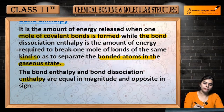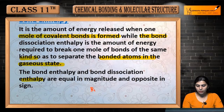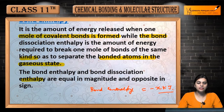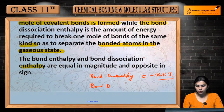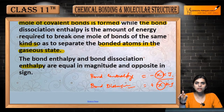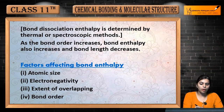The bond enthalpy and bond dissociation enthalpy are equal in magnitude and opposite in sign. Joh bond enthalpy hoti hai aur joh bond dissociation energy hoti hai unka magnitude, matlab unki values, equal hoti hai but unka sign opposite hota hai. Jaise agar bond enthalpy mein energy released ho rahi hai toh woh minus q joule hai, aur bond dissociation mein aapne energy supply ki hai toh woh plus q hai.